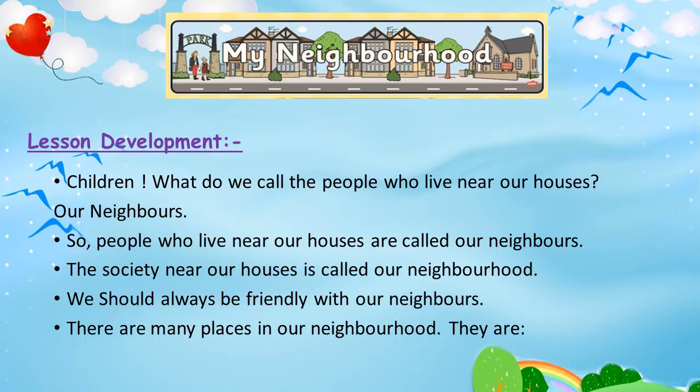The people who live near our houses are called our neighbors. In the same way, the area near our houses is called our neighborhood. The society which is our home — that area is called our neighborhood.